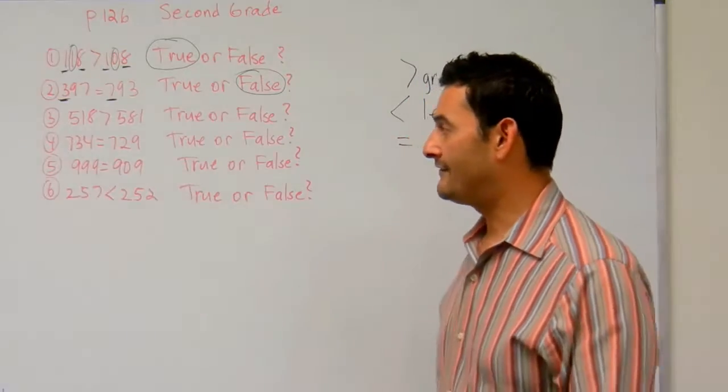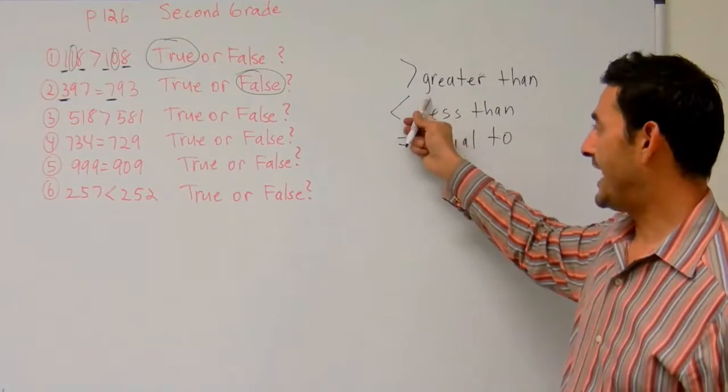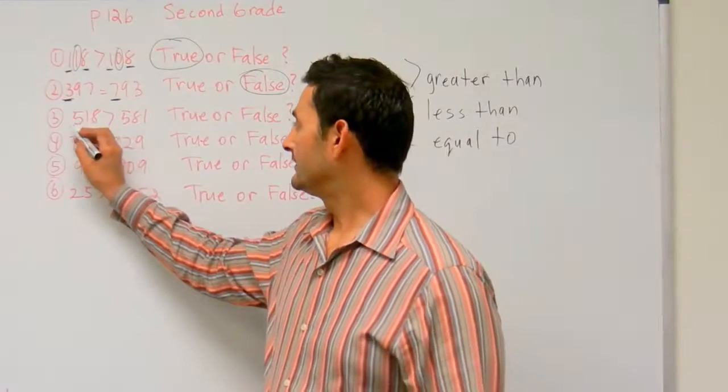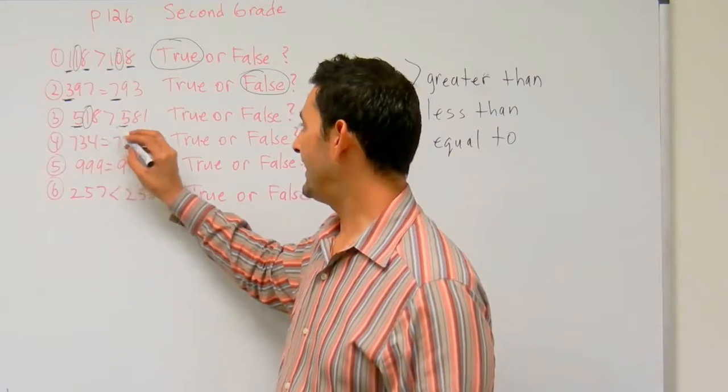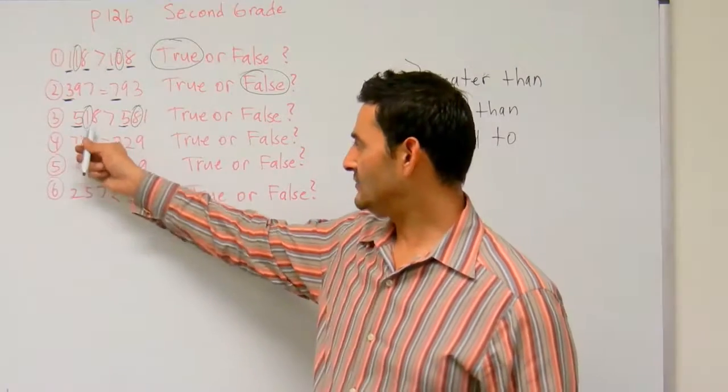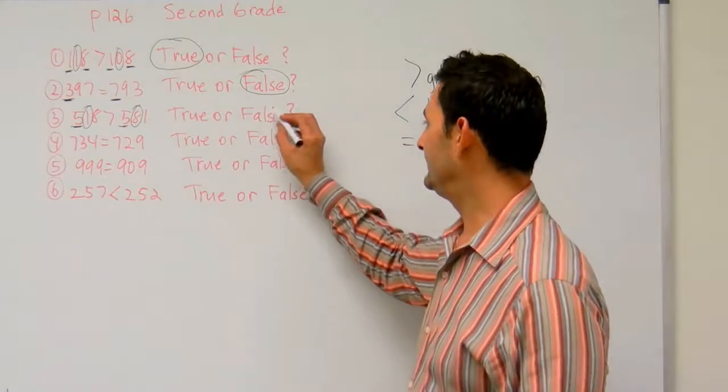Number three. Here we have 518 is greater than 581. Is that true? Well, the five in the hundreds place is the same. The one is there in the tens place and we have an eight there in the tens place. Is this one greater than this eight? Definitely not. So that's going to be false.